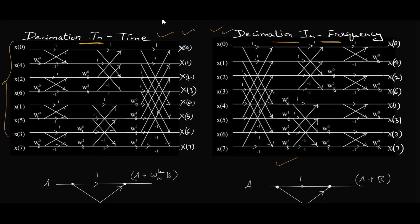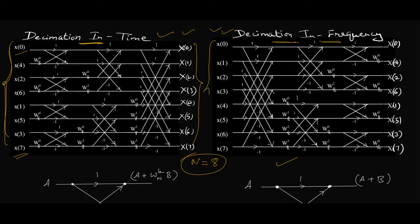Both butterfly diagrams are of the same magnitude. I've considered an 8-point DFT, so N is 8. In the decimation in time algorithm, x0 to x7 are the time domain samples, and on the output side we have the DFT frequency domain samples. Similarly for DIF, these are time domain samples and on this side we have frequency domain samples.